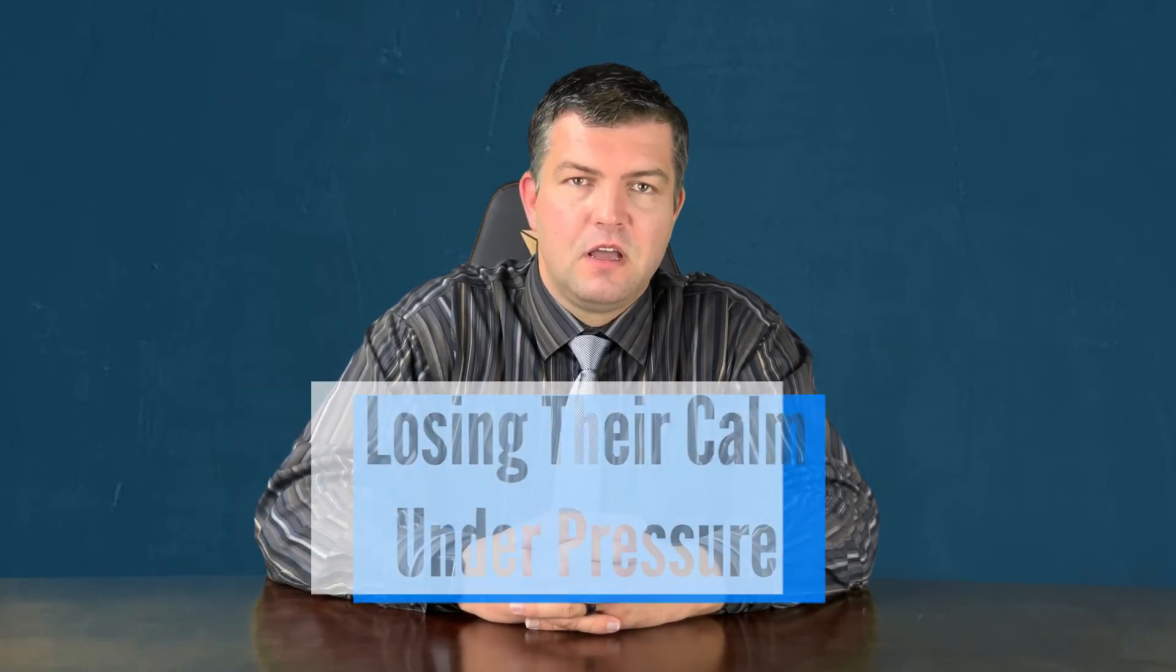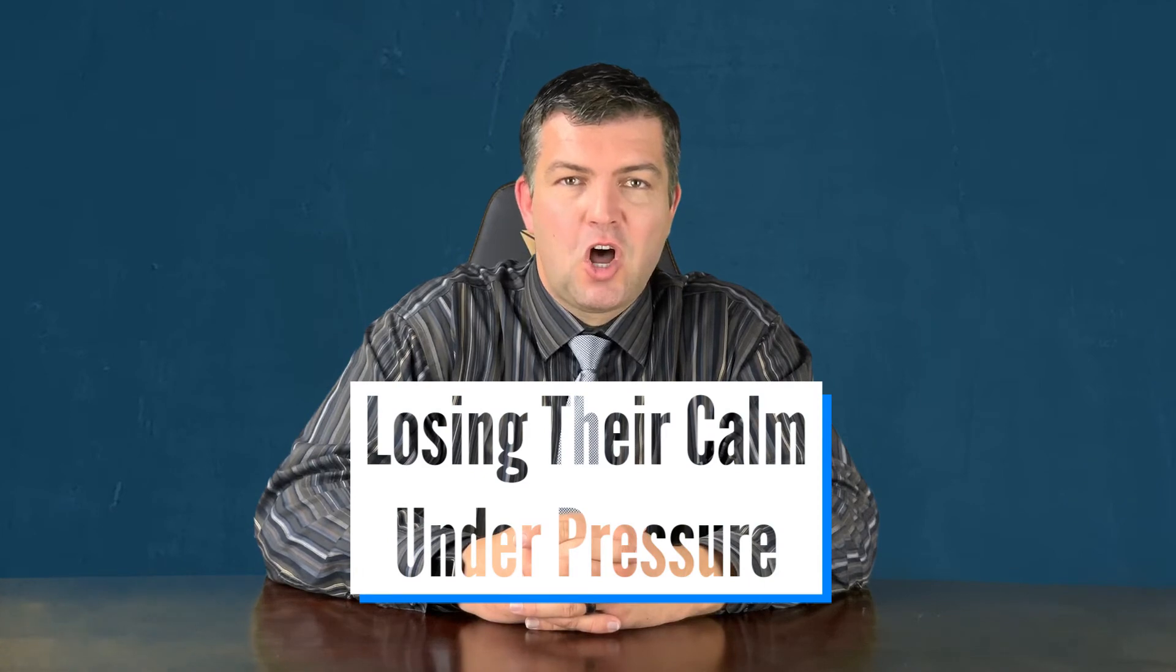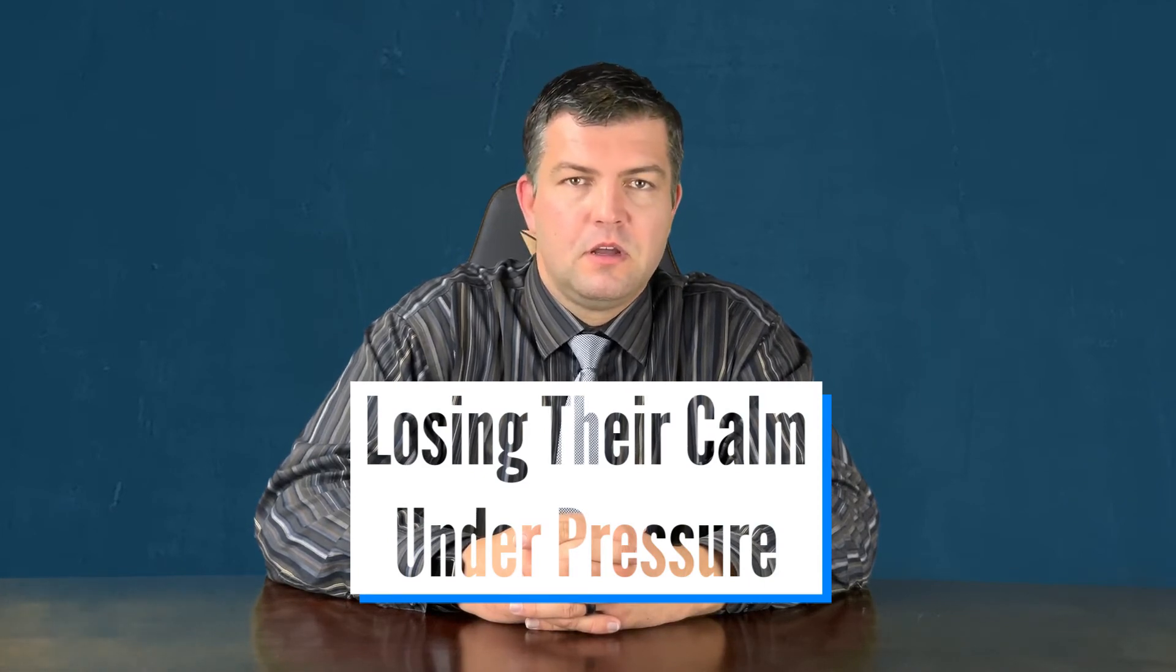Number five, ISTJs losing their calm under pressure. No personality type is perfect, and each type is susceptible to different responses under high levels of stress. When overloaded with stress, ISTJs can come off extremely out of character as they fail to maintain their usually calm and reasonable judgment.